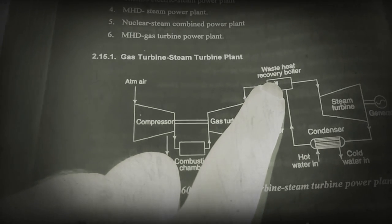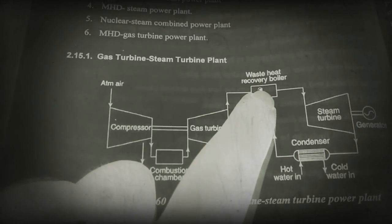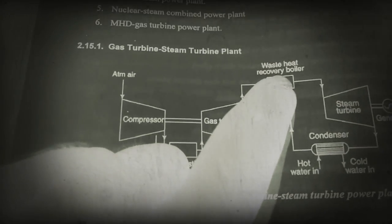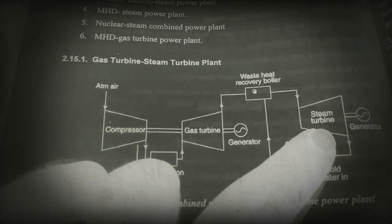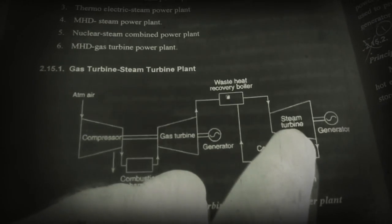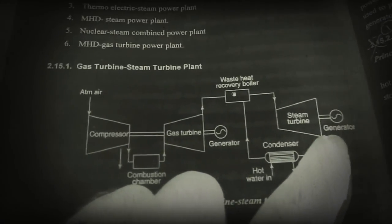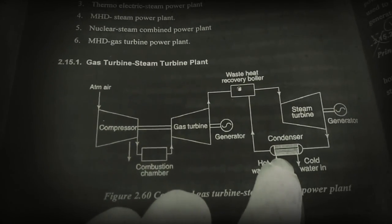water to make steam. This steam is then fed to the steam turbine where the steam expands and rotates the turbine. Power is generated by the steam power plant. Then the steam is condensed to water